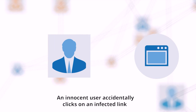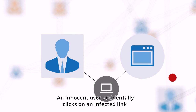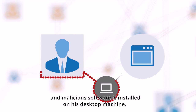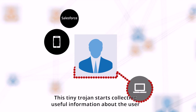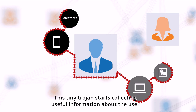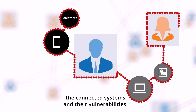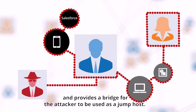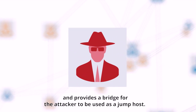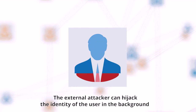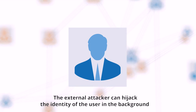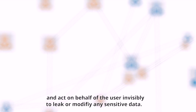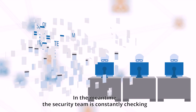Let's see an example. An innocent user accidentally clicks on an infected link and malicious software is installed on his desktop machine. This tiny trojan starts collecting useful information about the user, the connected systems, and their vulnerabilities, and provides a bridge for the attacker to be used as a jump host. The external attacker can hijack the identity of the user in the background and act on behalf of the user invisibly to leak or modify any sensitive data.